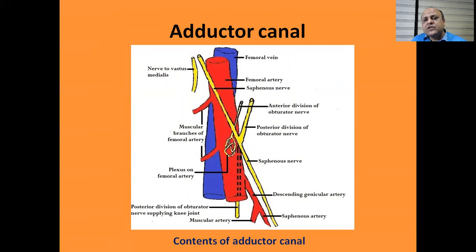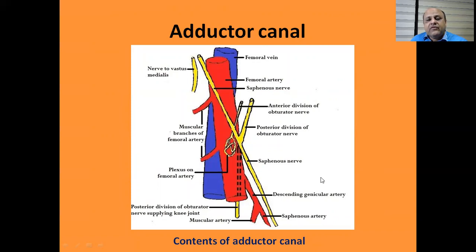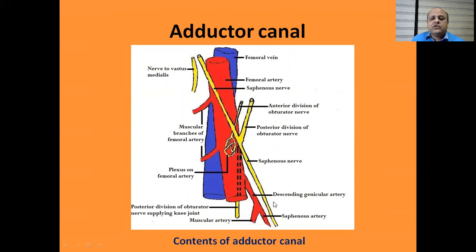At the apex of the femoral triangle, the femoral vein, which was lying medial to the artery in the femoral triangle, comes posteromedial to the artery and then crosses it to lie on the lateral side. The femoral artery gives muscular branches and a descending genicular branch to the knee joint. The saphenous nerve crosses the femoral artery superficially and continues downward. The anterior division of the obturator nerve ends by forming a plexus on the femoral artery, while the posterior division of the obturator nerve goes on to supply the knee joint. All these structures and this diagram need to be practiced.